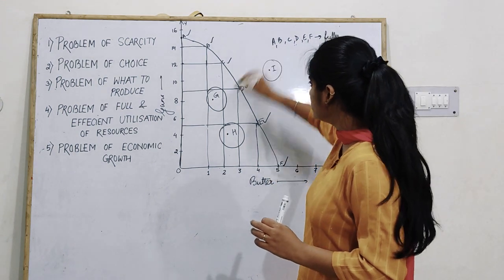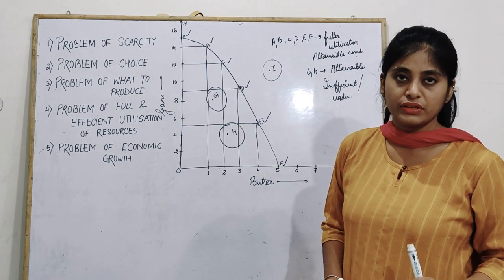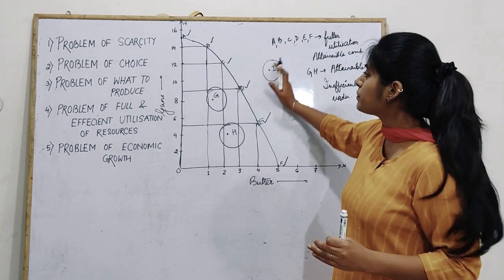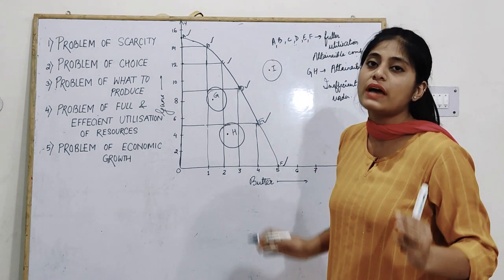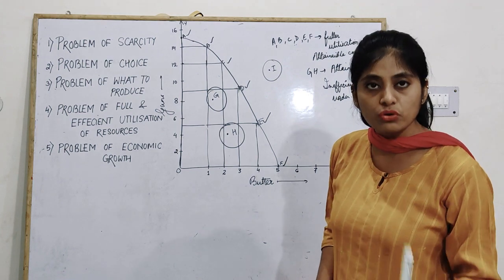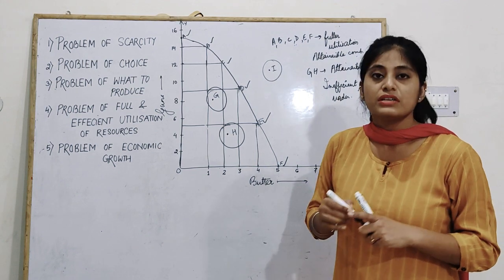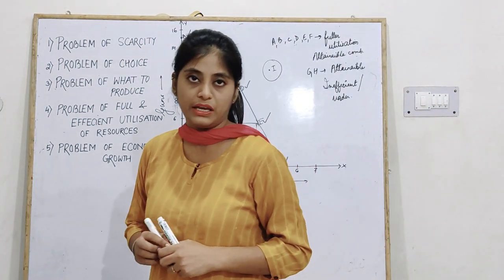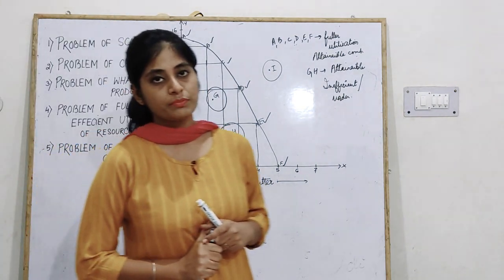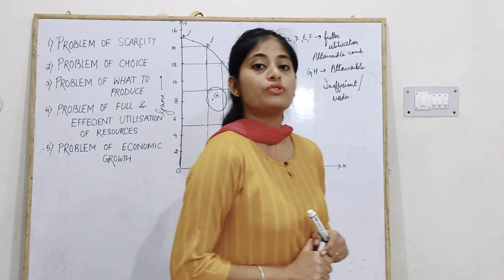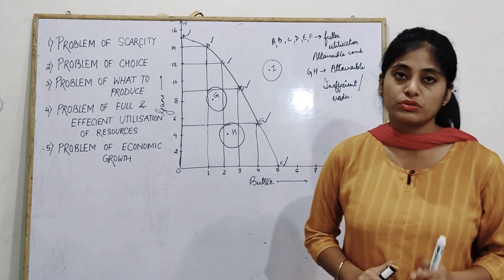Next is point I, which lies outside the PPC curve. This is a non-attainable combination because you don't have enough resources or technology to acquire these commodities. Suppose you have 100 people and you want to use 120 — it is not possible. You cannot attain those because your resources are limited and scarce.